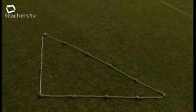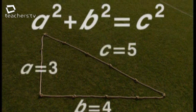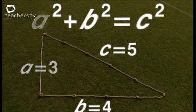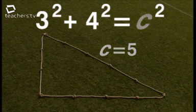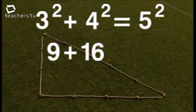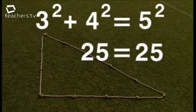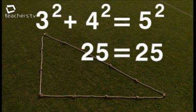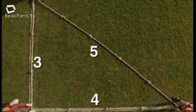Check out the maths. If it's a right-angle triangle, then A squared plus B squared should equal C squared. A is 3, B is 4, and C is 5. 3 squared is 9. 4 squared is 16. And that's 25. 5 squared is also 25. So there you have it: A squared plus B squared equals C squared. If the sides of a triangle are 3, 4, and 5, the only kind of triangle it can be is right-angled.